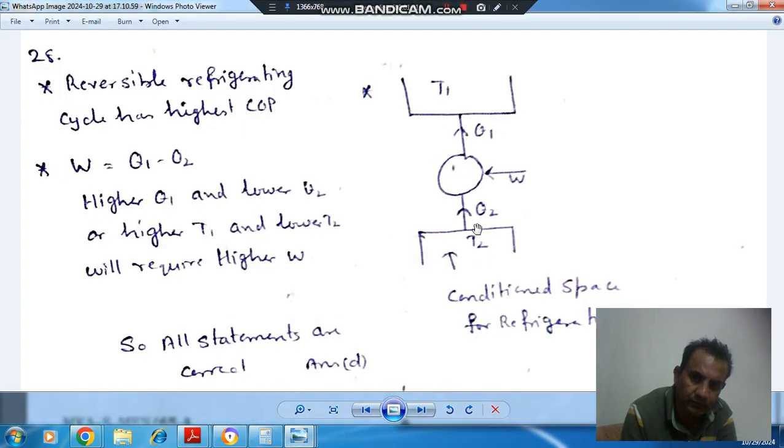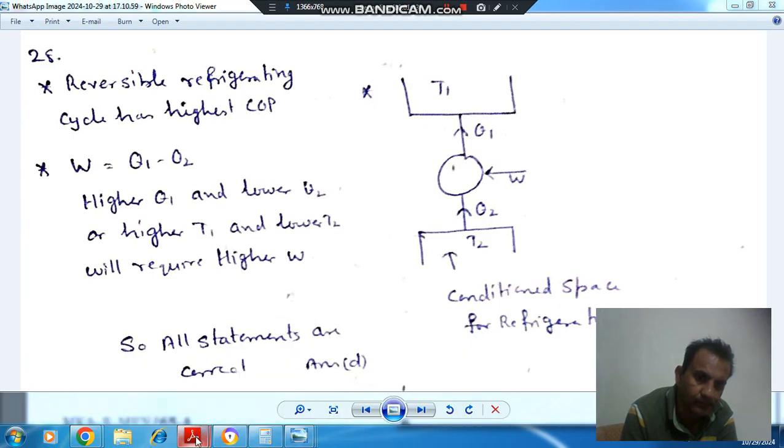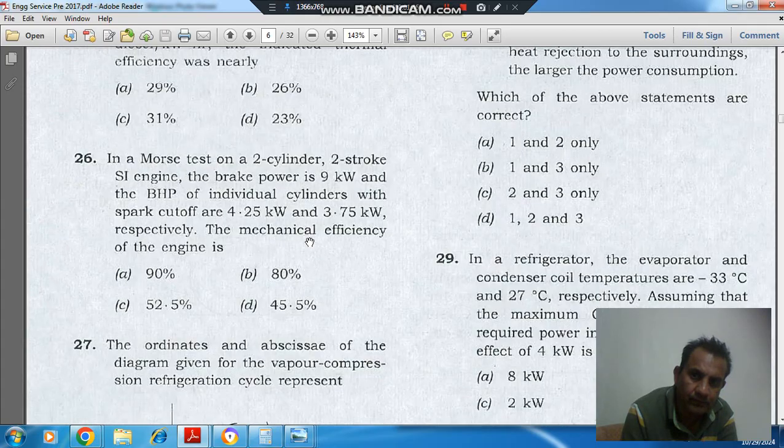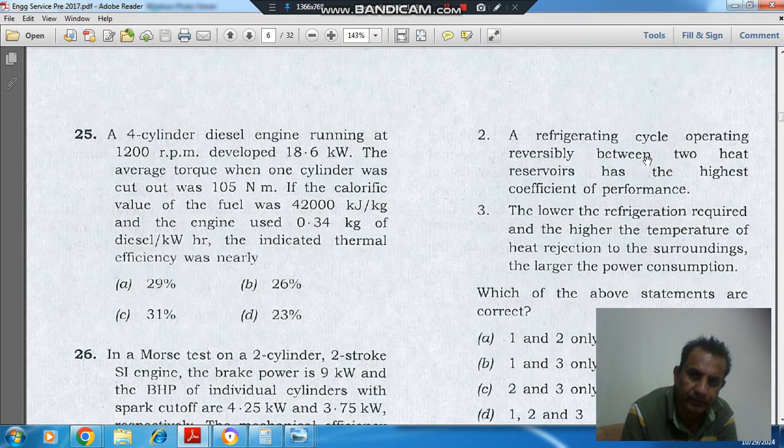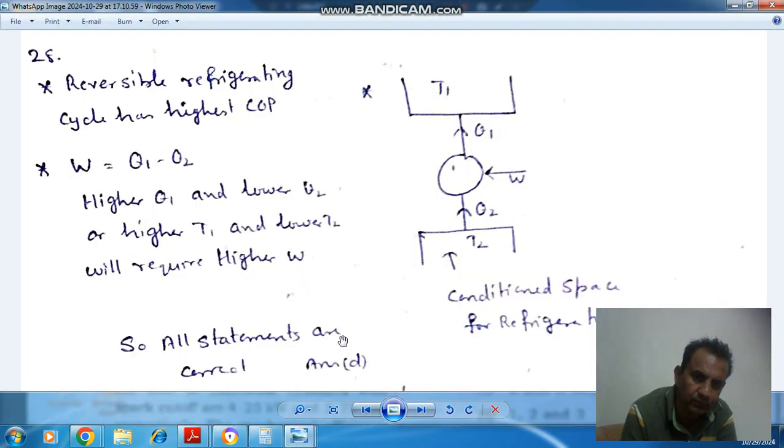And the second statement is: a refrigeration cycle operating reversibly between two heat reservoirs has the highest coefficient of performance. That is also true. A reversible refrigeration cycle has the highest efficiency.